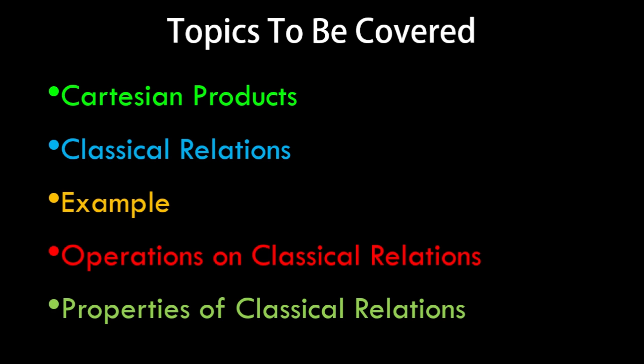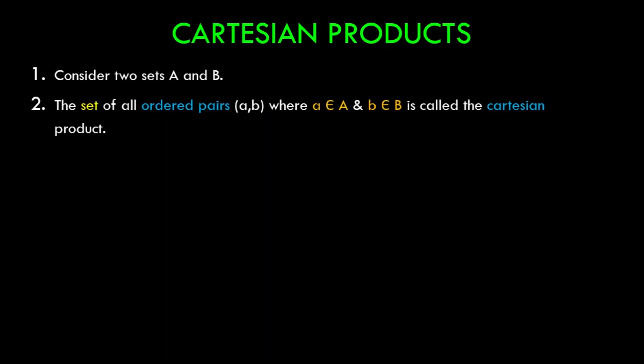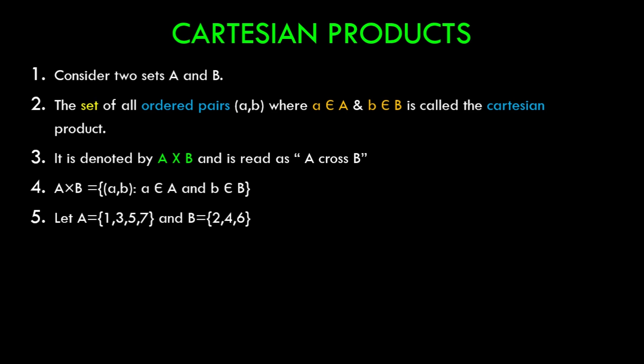So let's start with Cartesian product. What exactly is Cartesian product? Consider we have two sets A and B. The set of all ordered pairs (a,b) where the first element is from set A and second element is from set B is called the Cartesian product. It is denoted by A × B and is read as 'A cross B'.